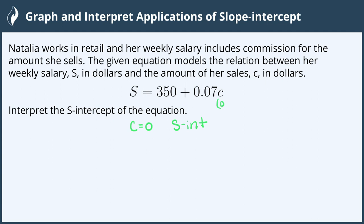If we plug zero into the equation, zero times 0.07 is zero, and so we have an s-intercept of 350.